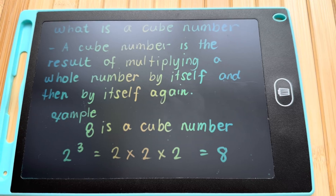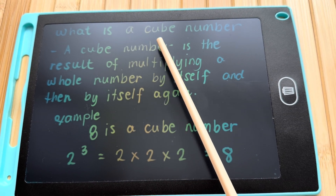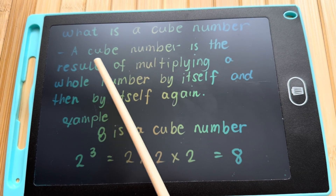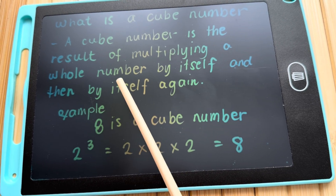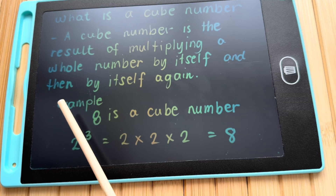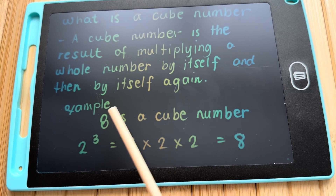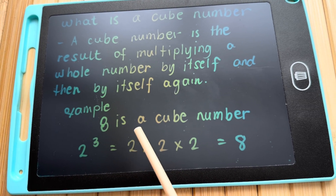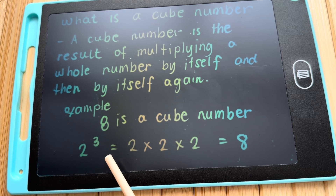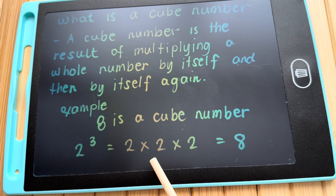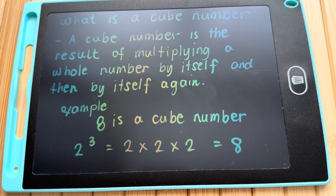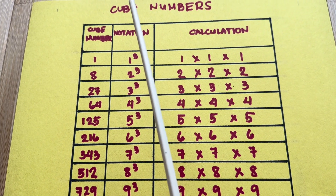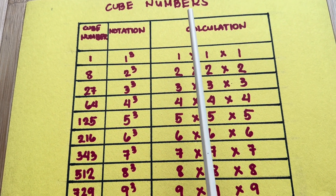Now, join me and let's do a recap. What is a cube number? A cube number is the result of multiplying a whole number by itself and then by itself again. Example, 8 is a cube number. 2 cube is equals to 2 times 2 times 2, which equals to 8. And now, let's check out some more examples of cube numbers.